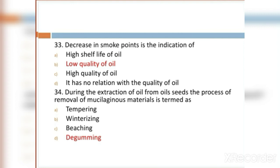MCQ 33: Decrease in smoke point is the indication of: Option A: high shelf-life of oil. Option B: low quality of oil. Option C: high quality of oil. Option D: it has no relation with the quality of oil. Option B, low quality of oil, is the right answer.